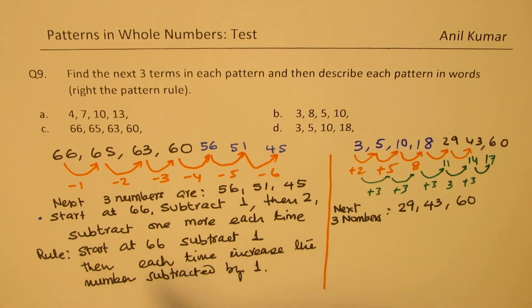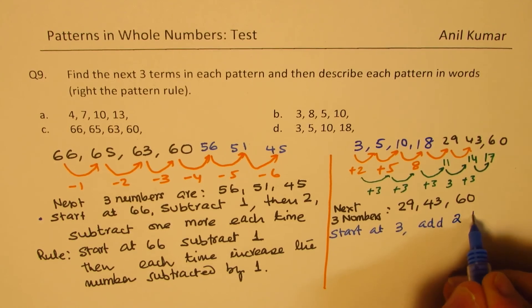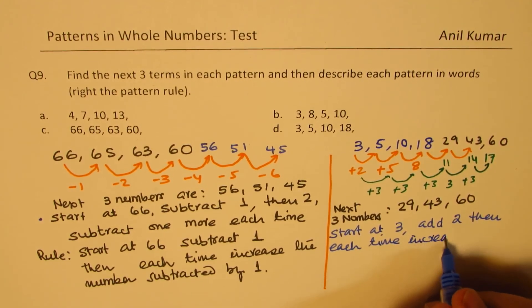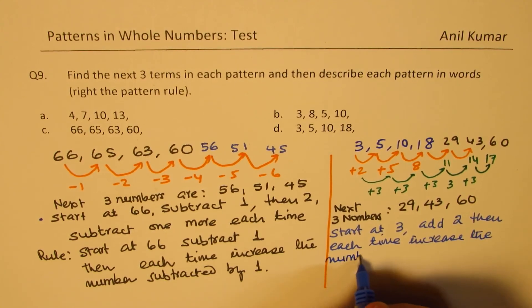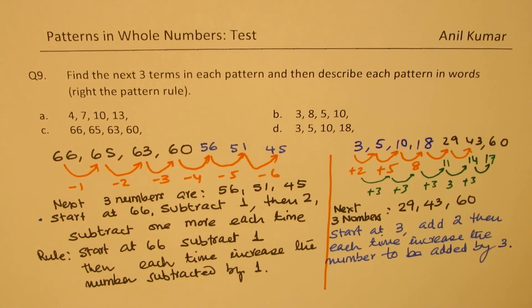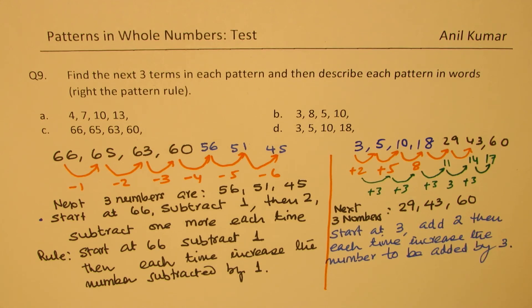To describe this pattern, we can say: start at 3, add 2. Then each time, increase the number to be added by 3. That is how you can describe this particular pattern. With this, we conclude the video. We have seen very interesting examples where different numbers were added at different times to get the next number. I hope you find it interesting and useful. Feel free to write a comment, share your views, and if you like and subscribe to my videos, that would be great. Thanks for your time and all the best. Bye.